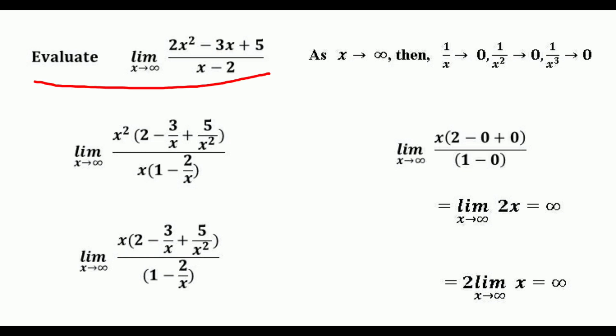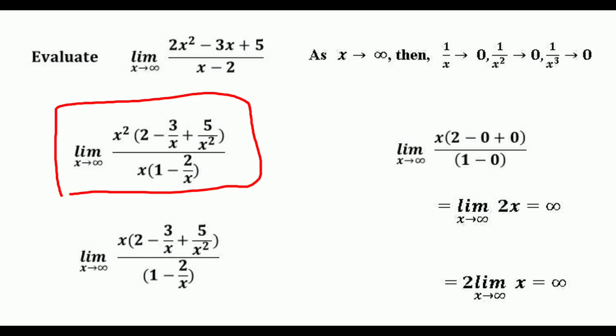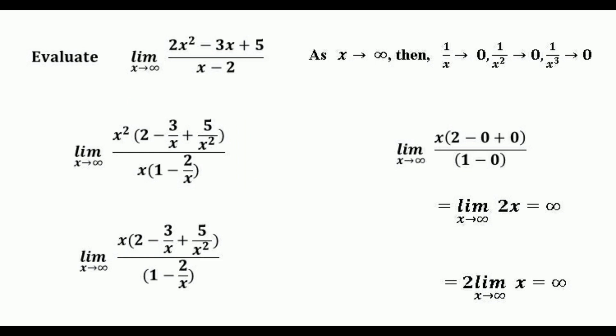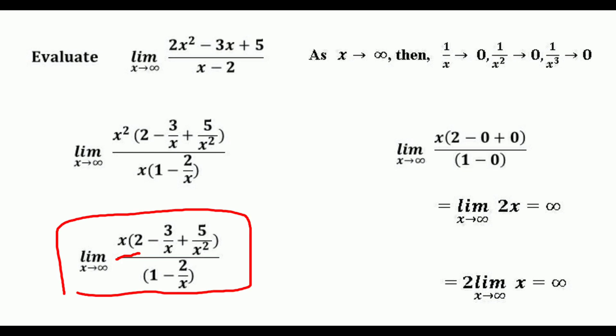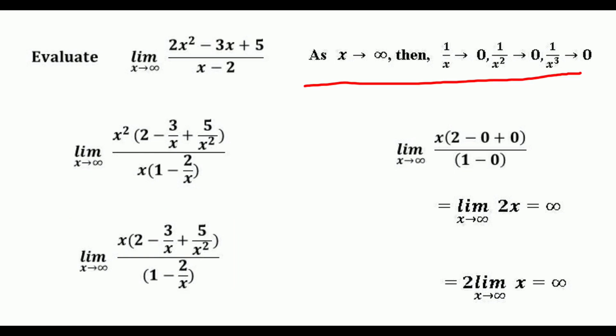Consider another example: evaluate the limit of (2x² - 3x + 5) / (x - 2) as x approaches infinity. Here the highest degree is 2, which is in the numerator, that is 2x². So we divide both numerator and denominator by x². The numerator becomes x²(2 - 3/x + 5/x²) and the denominator becomes x(1 - 2/x). As x approaches infinity, then 1/x, 1/x², and 1/x³ all approach 0.